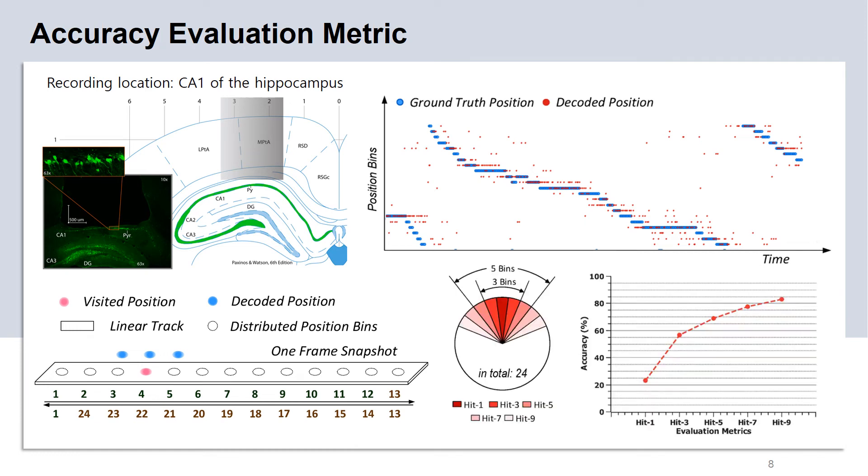In order to measure the decoding accuracy, we came up with an evaluation metric called hit-n accuracy, in which n indicates the number of position bins we count as correct decoding around the true position bin. As the figure on the bottom right shows, as we enlarge n from 1 to 9, we observe gradually increased decoding accuracy for the demonstration example shown in this slide.